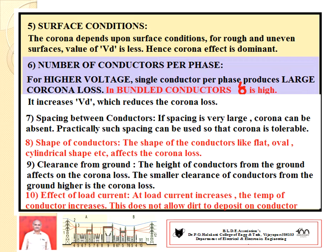A very important factor is clearance between conductor and ground. The height of the conductors from the ground also affects corona loss. If this clearance is small, then corona loss will be more. Lastly, we have to consider the effect of load current. As the load current increases, the temperature of the conductor also increases. This increase in temperature does not allow dirt to accumulate on the conductor, hence it affects the value of Vd and also affects the corona loss.